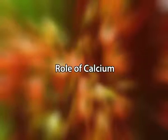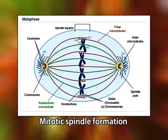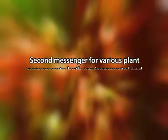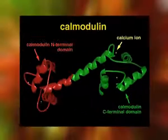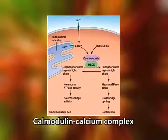Another important macronutrient is calcium, taken up as the divalent cation Ca²⁺. It is used in the synthesis of new cell walls, particularly the middle lamella that separates newly divided cells, and is also used in the mitotic spindle during cell division. Calcium is required for normal functioning of plant membranes and has been implicated as a second messenger for various plant responses to environmental and hormonal signals. In this function, calcium may bind to calmodulin — a protein found in the cytosol — and the calmodulin-calcium complex regulates many metabolic processes.